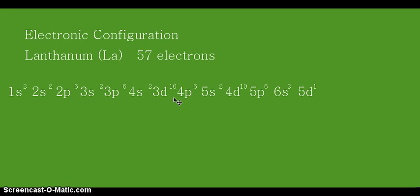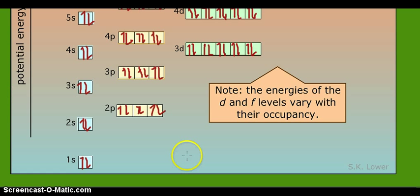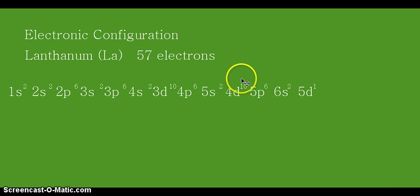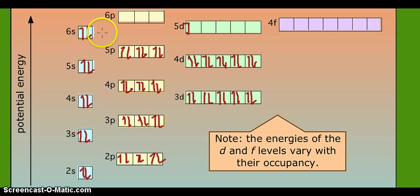Then we have 3d10, 4p6, 5s2. Alright, until here. Then next we have 4d10, 5p6, 6s2, and 5d1. Alright, so that's 5p6, 6s2, 5d1. Alright, so that is our electronic configuration based on the filled energy orbitals. Based on the number of total electrons of your lanthanum.